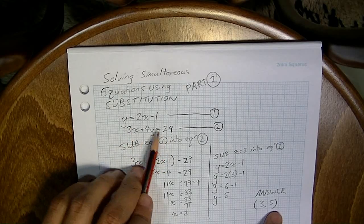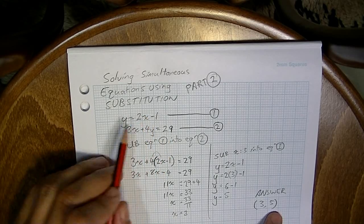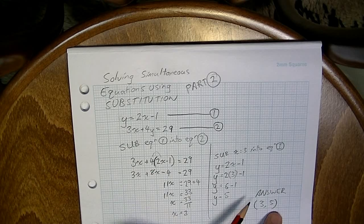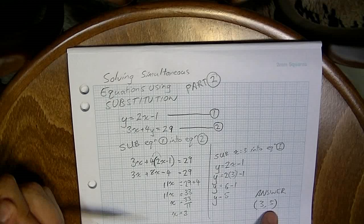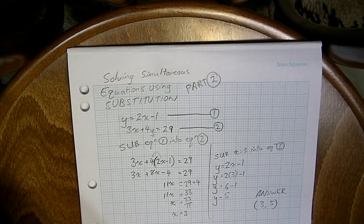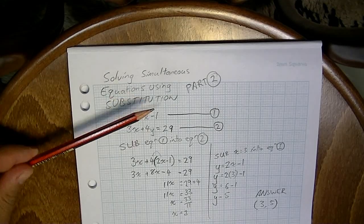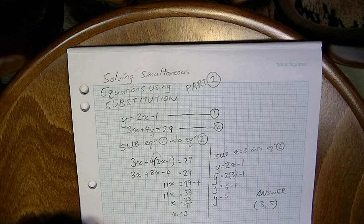We already know it works in that equation, because that's where we got it from. So, (3, 5), the point (3, 5), works in both of these equations. That's our simultaneous solution. That's solving simultaneous equations using substitution in a slightly more difficult question.